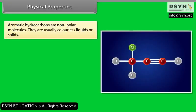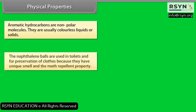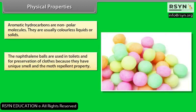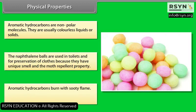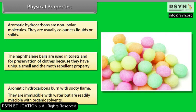Physical properties. Aromatic hydrocarbons are non-polar molecules. They are usually colorless liquids or solids. Naphthalene balls are used in toilets and for preservation of clothes because they have a unique smell and moth-repellent property. Aromatic hydrocarbons burn with a sooty flame. They are immiscible with water but readily miscible with organic solvents.